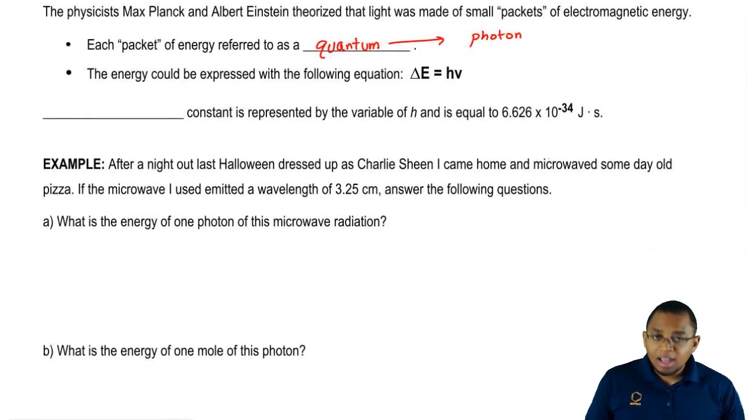We're going to say that they said that we could calculate the energy of a quantum or a photon if we use the equation delta E equals h times v. We know that v stands for mu, so that means that that's frequency.